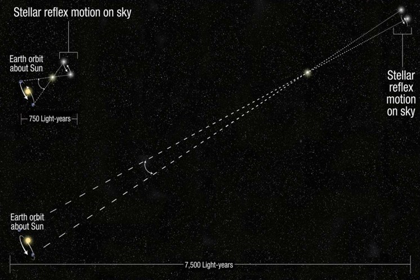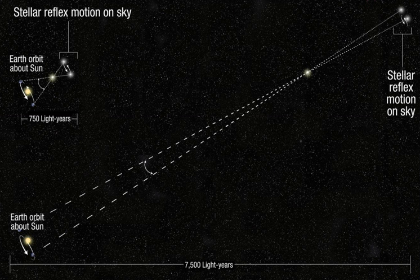The distance to an object measured in parsecs is the reciprocal of the parallax measured in arcseconds: d(pc) = 1 / p(arcsec). For example, the distance to Proxima Centauri is 1 / 0.7687 = 1.3009 parsecs, or 4.243 light-years.